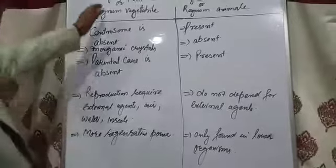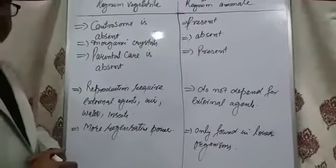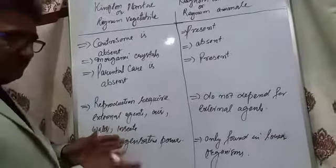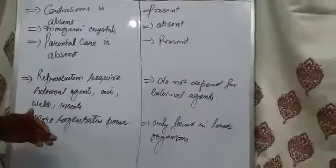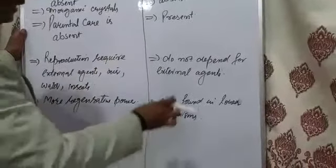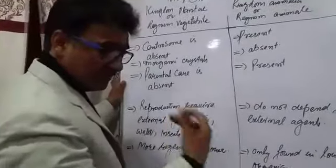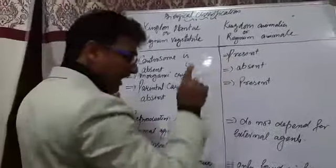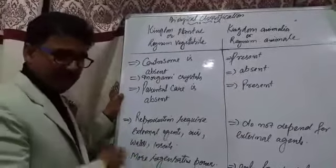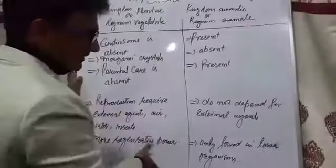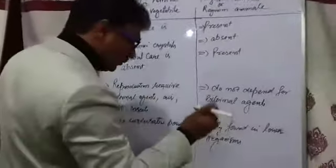The last point is regeneration. In case of Kingdom Plantae, they have a high power of regeneration — each and every part can regenerate. If any branch is cut it can regenerate, or if a root is damaged it can develop a new root. In case of Kingdom Animalia, the regeneration power is very less. If it is found, it is found only in lower organisms such as protists. Certain parts in animals do show regeneration, like nails, liver, and hair, but overall animals have a much lower power of regeneration compared to plants.